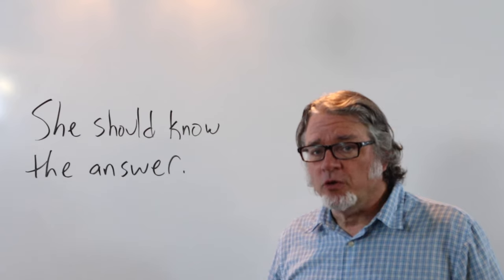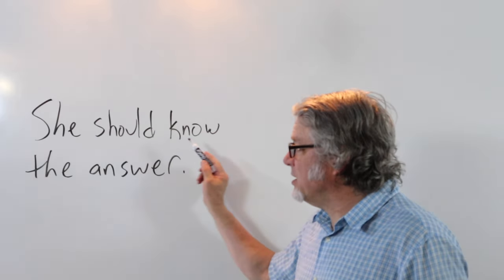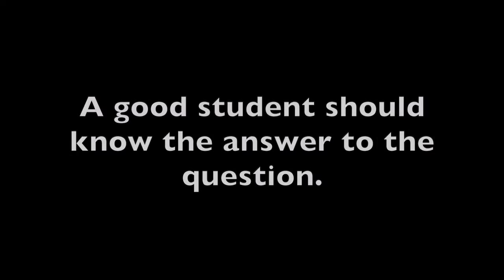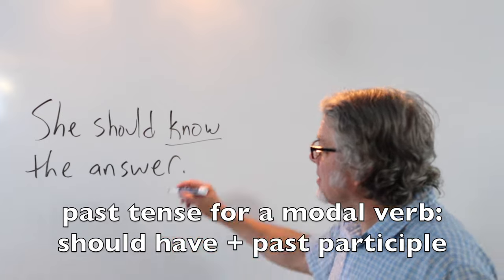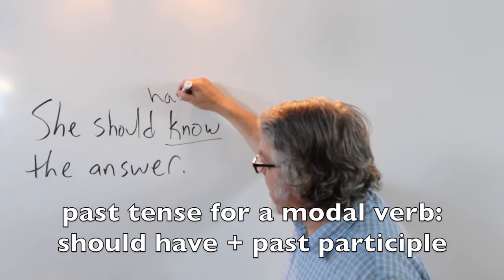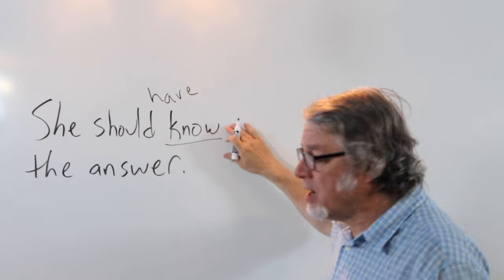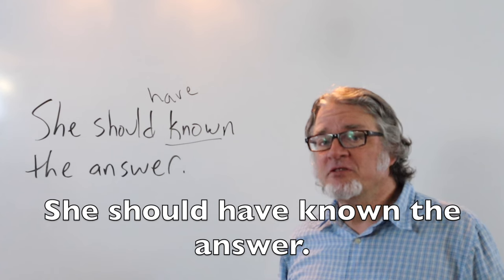She should know the answer. The expectation is that she knows the answer because she's a good student. If I put this in the past tense, have is after should and then this becomes the past participle. She should have known the answer.